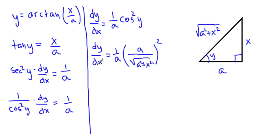And you can see we're going to have some cancelling here, so we'll have dy over dx equals a over, and then that square root and square will cancel, a squared plus x squared. Okay, so here's our derivative.